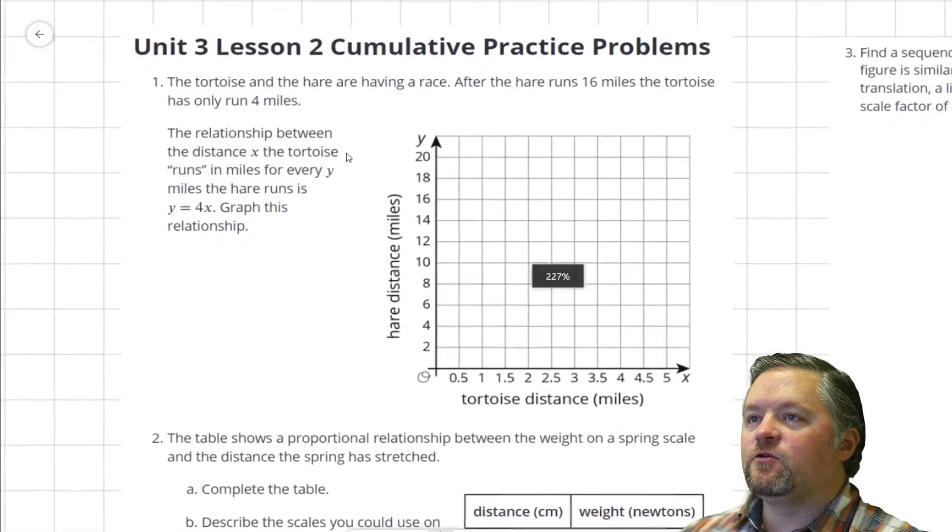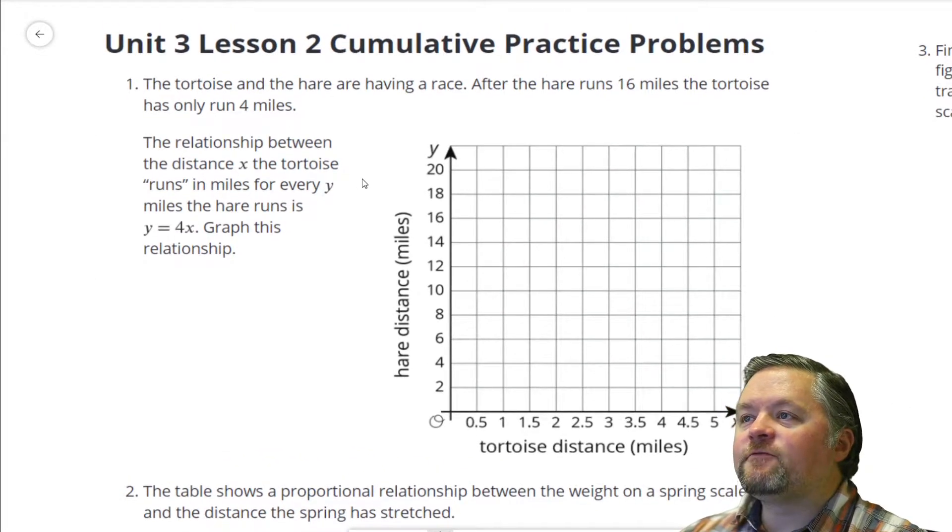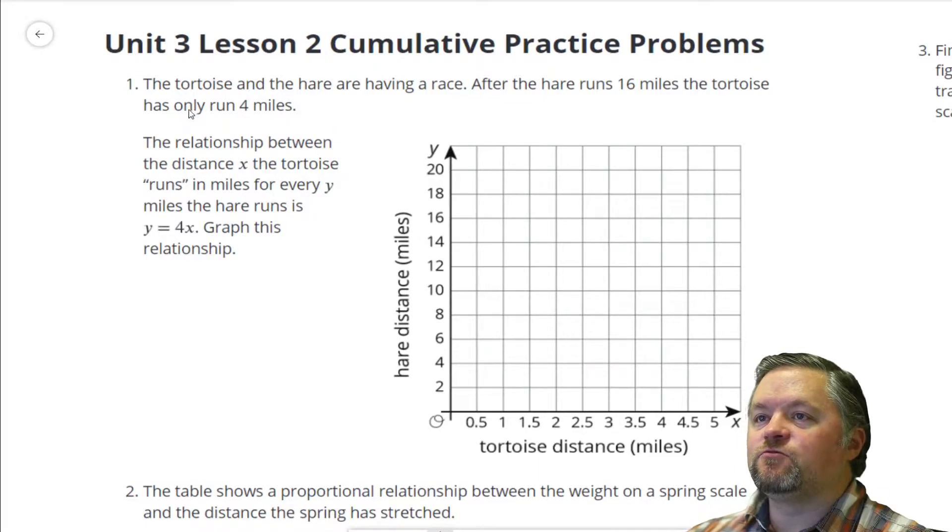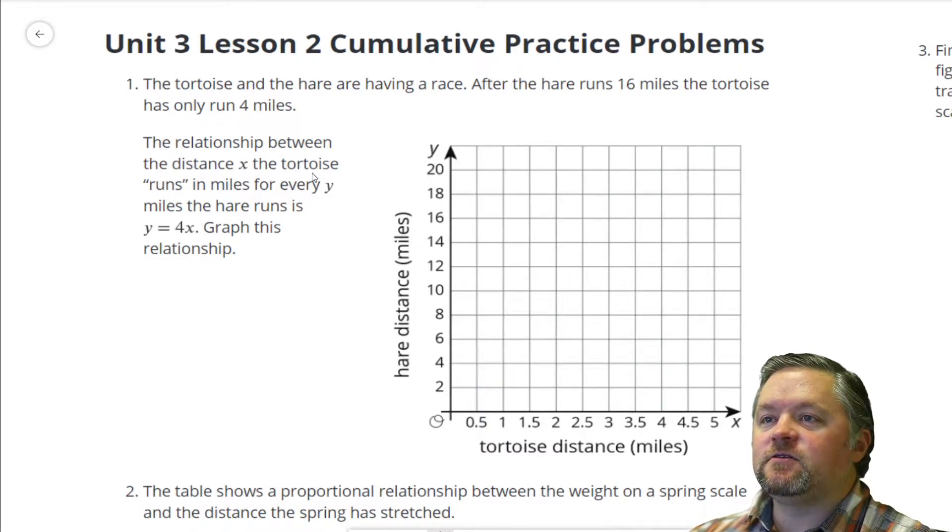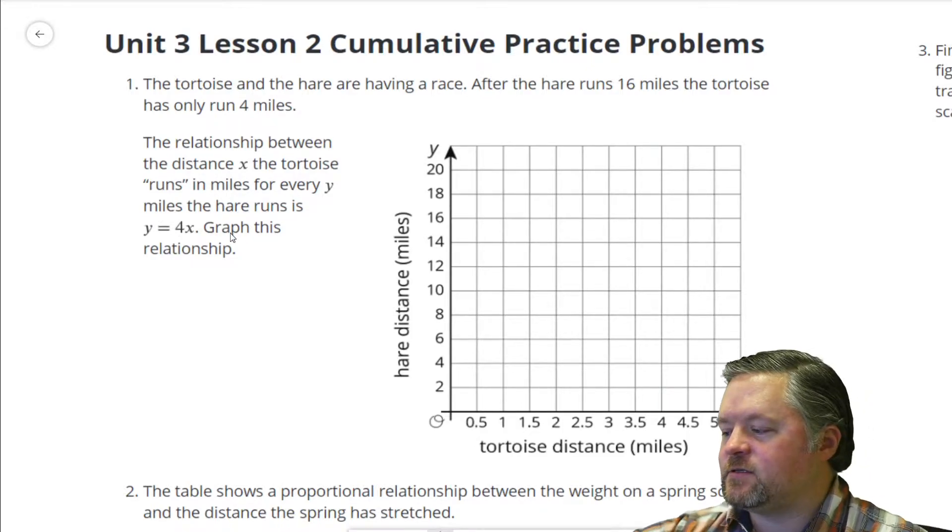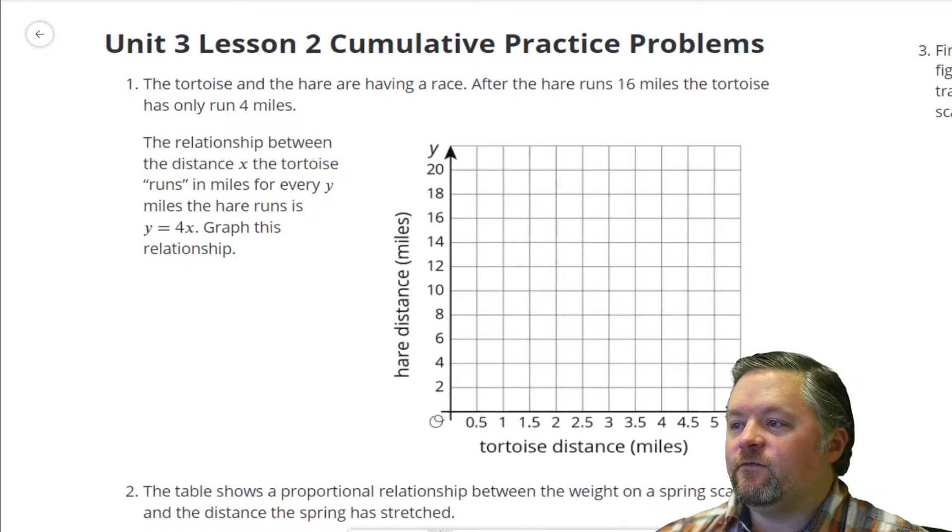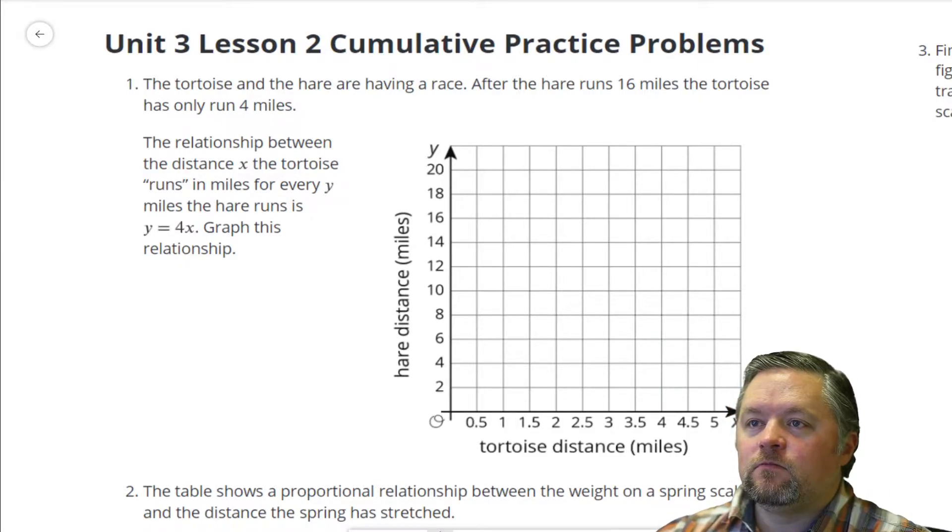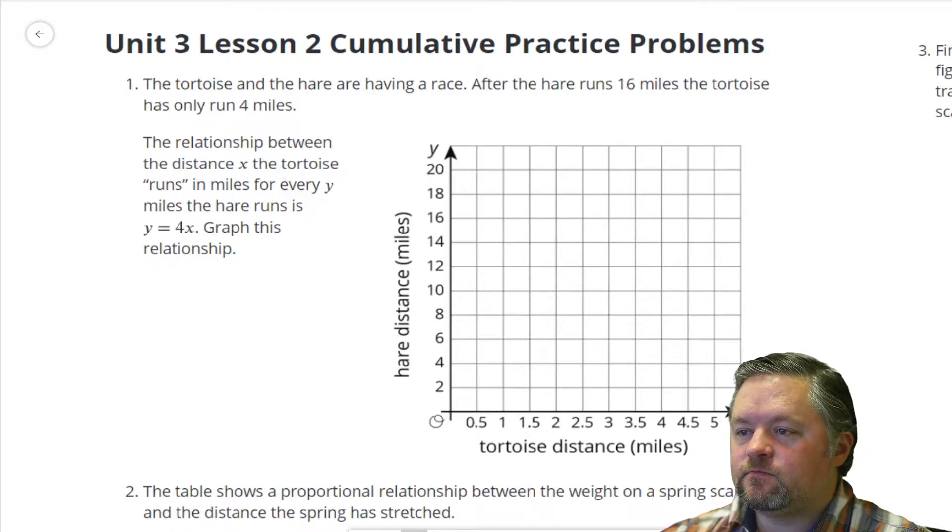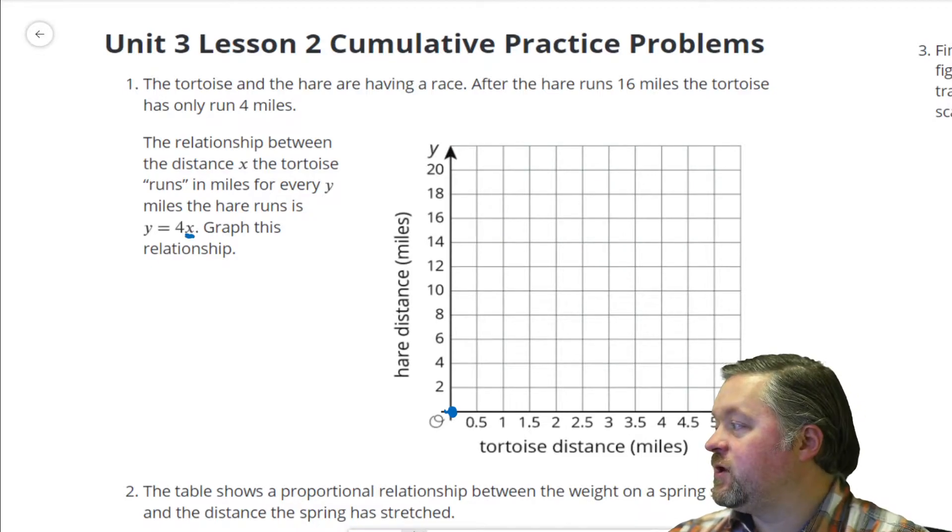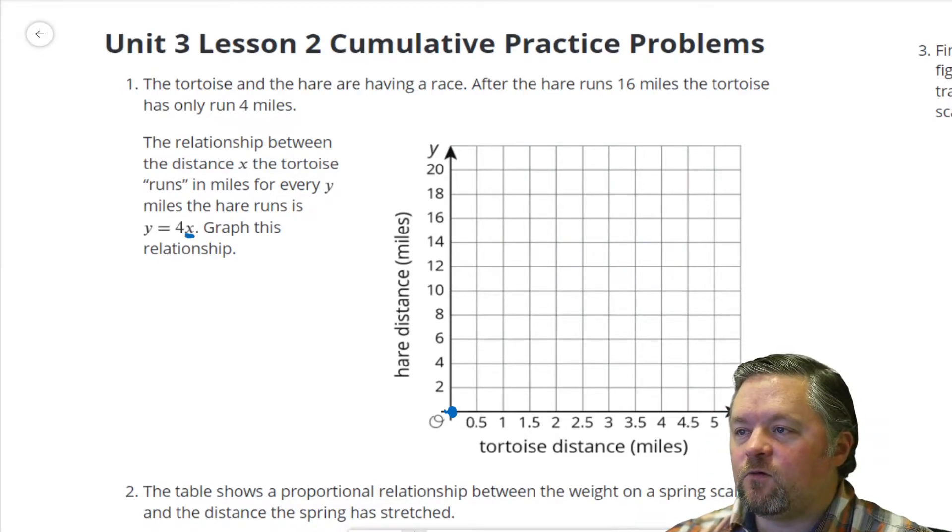First problem here, the tortoise and the hare are having a race. After the hare runs 16 miles, the tortoise has only run 4 miles. The relationship between the distance x the tortoise runs in miles for every y miles the hare runs is y equals 4x. So, if x is 0, 4 times 0 is 0. If x is 1, if we substitute in a 1 for x, y is 4. 1 times 4 is 4.